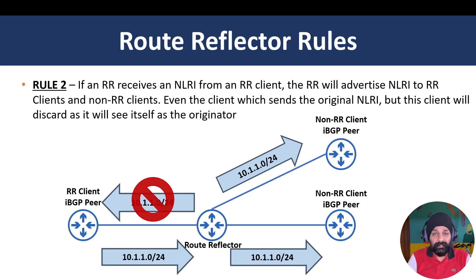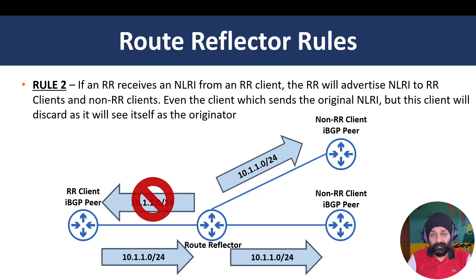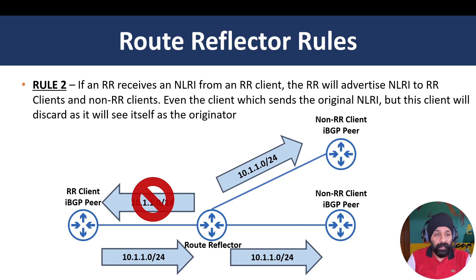Rule number two: if an NLRI is received from an RR client, it will be advertised to both non-RR clients and RR clients, and it will also be sent back to the originating RR client — but that will be rejected due to the originator ID information in the NLRI. When one router is configured as a route reflector client, the route reflector will advertise received routes to all non-RR clients and RR clients.